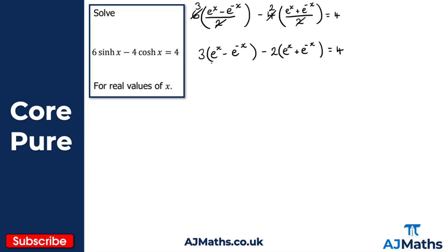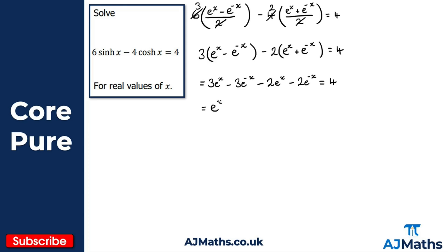Multiplying out each bracket: 3 times e^x gives 3e^x, 3 times minus e^(-x) gives minus 3e^(-x). Then minus 2 times e^x gives minus 2e^x, and minus 2 times e^(-x) gives minus 2e^(-x). That's all equal to 4. Simplifying the left-hand side: 3e^x minus 2e^x gives e^x, and minus 3e^(-x) minus 2e^(-x) gives minus 5e^(-x). So e^x minus 5e^(-x) equals 4.